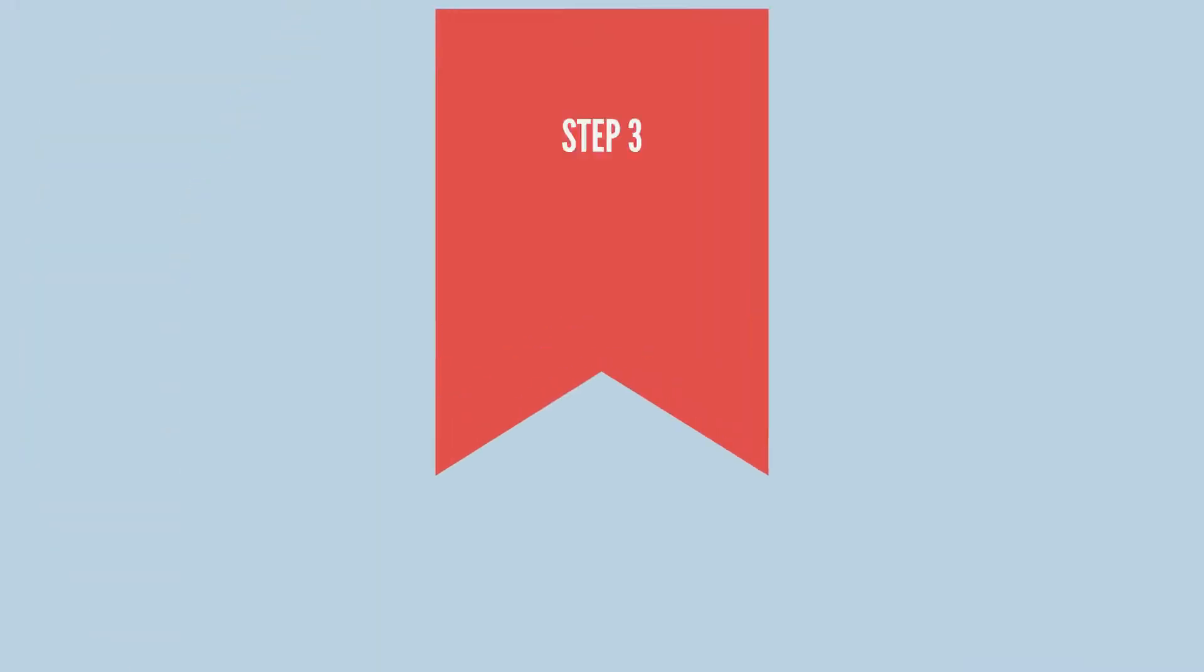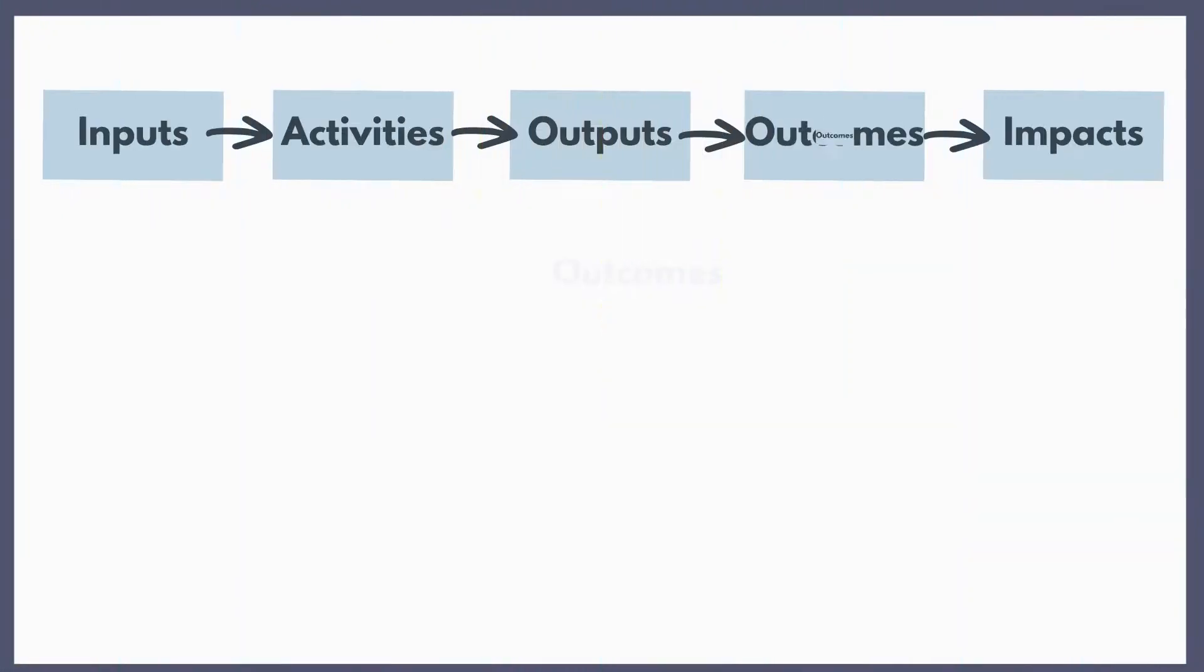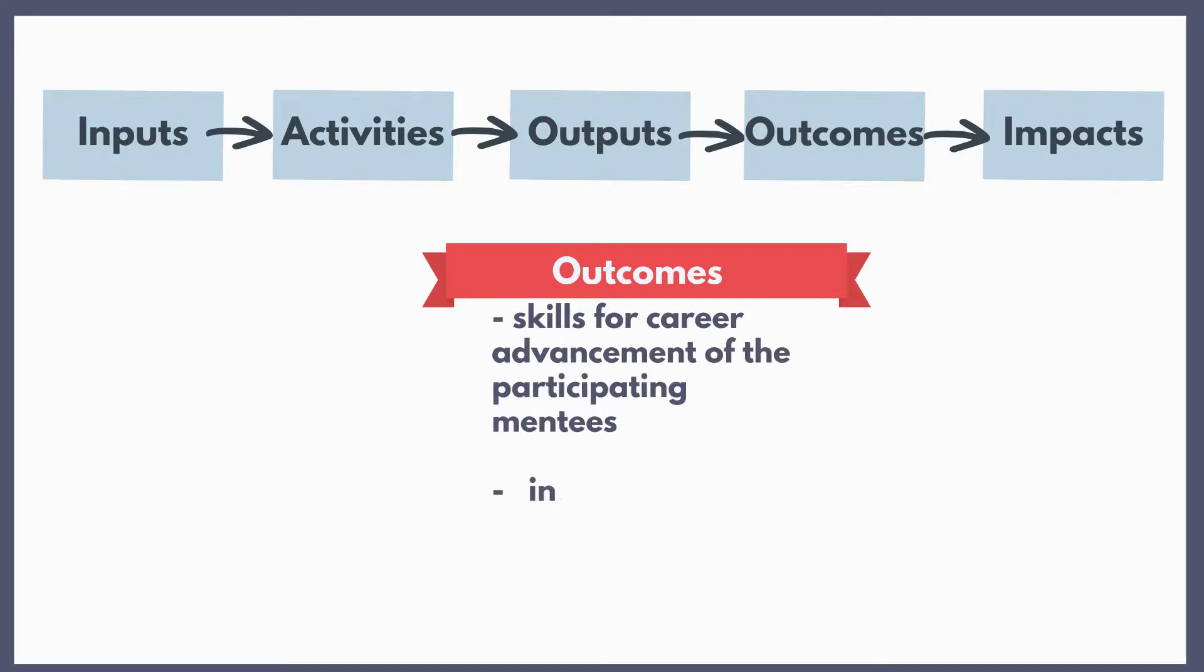Define the expected short-term outcomes of the measures. Outcomes could include a description of skills for career advancement of the participating mentees, and increased awareness of gender bias of training participants.